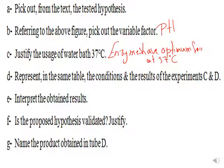To interpret: after adding trypsin and water to tube C at pH 2 where temperature equals 37 degrees Celsius, the albumin remains in the tube after 60 minutes. This indicates that there is no digestion in tube C.